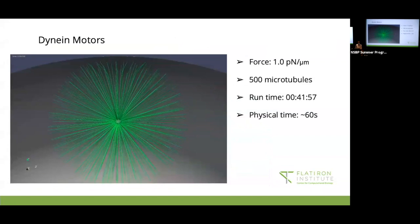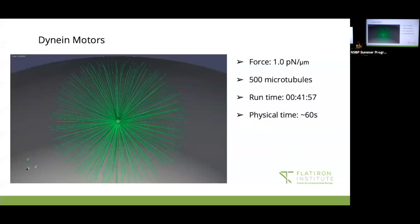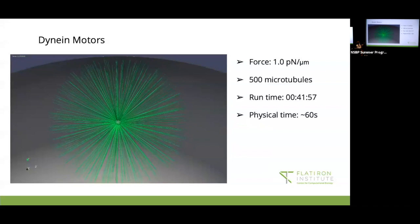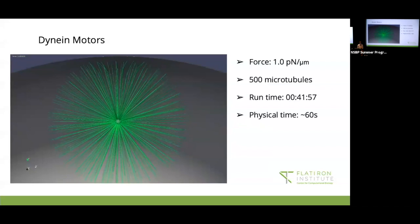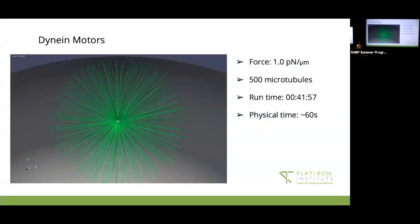Then I have another simulation using dynein motors. These microtubules are a lot longer, about 20 microns with the force of 1 piconewton per micron, with, again, 500 microtubules. So you can see we placed it near the cell periphery again, but it's not moving towards the center. You can see it's kind of pushing against the cell periphery and making it bend. So this one ran for about 40 minutes, and you can see 60 seconds. It was kind of faster to run, but you can also see it moves a lot less.